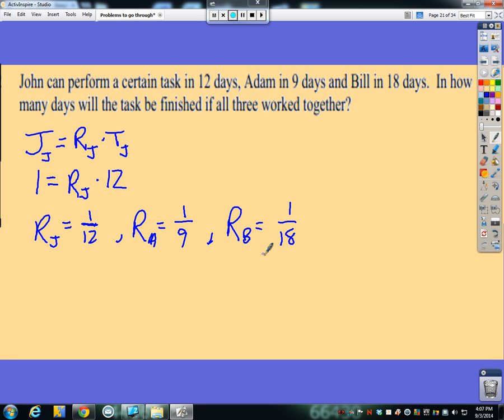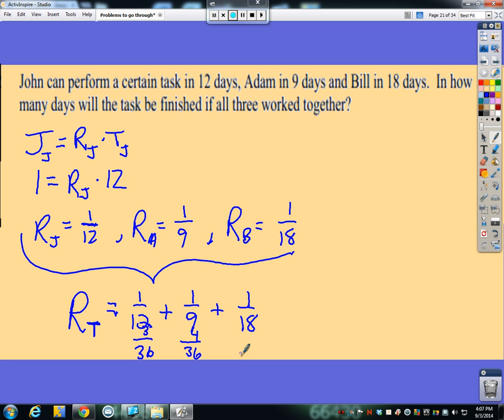Now, if they're going to work together, that means they have a combined rate. So I'm going to use t for total. Their total rate would be John's rate, working with Adam's rate, working with Bill's rate. So now we have three fractions to add together here. Our common denominator is thirty-sixths, so we have three thirty-sixths, four thirty-sixths, and two thirty-sixths, which gives me nine thirty-sixths, which is one-fourth.